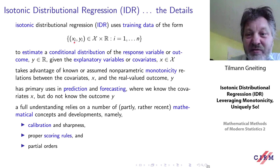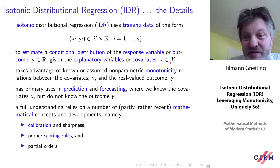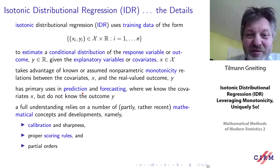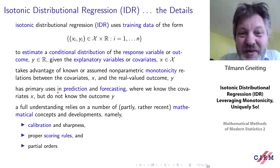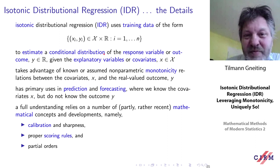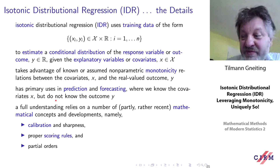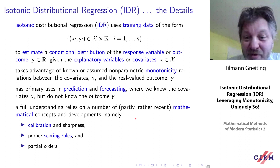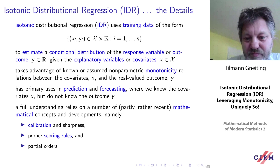Setting up isotonic distributional regression: we work with training data where the explanatory variables or covariates lie in a general covariate space X, and the responses are real-valued. IDR takes advantage of known or assumed monotonicity relations between the covariates and the real-valued outcome. The primary uses of IDR are aligned with prediction and forecasting — we know the covariates X but do not know the outcome Y yet. The full understanding relies on a number of mathematical concepts: calibration and sharpness, proper scoring rules, and partial orders.